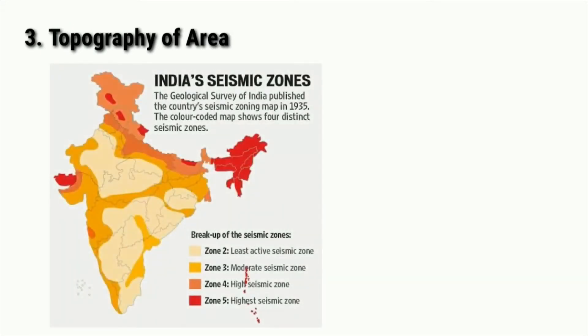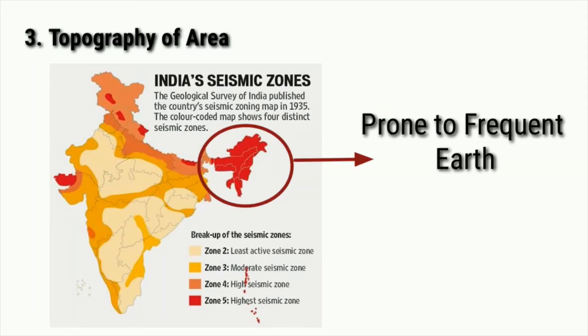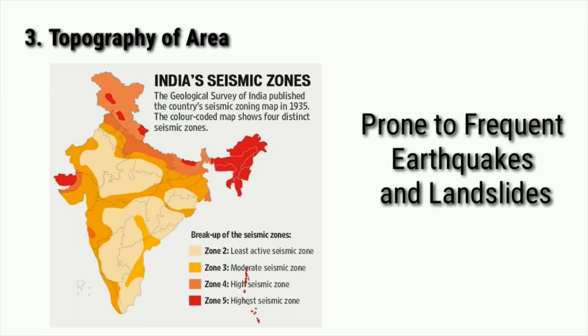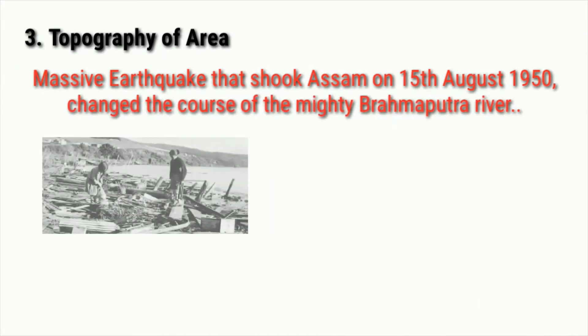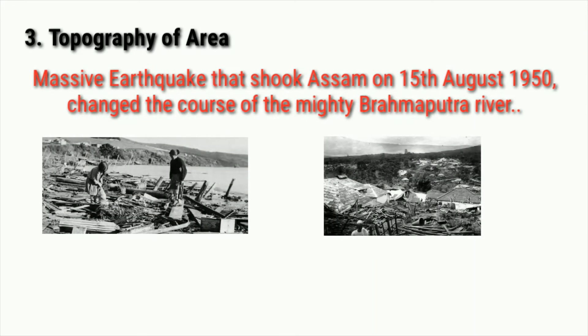The next most important factor is the topography of the area, which plays a vital role in the flooding of Assam. Assam is situated on an earthquake and landslide prone zone, and the frequent quakes are responsible for its huge shifting course. The massive earthquake that shook Assam on Independence Day of India in 1950 not only claimed the lives of 1,000 people but also changed the course of the mighty Brahmaputra river.